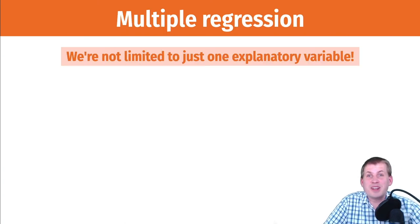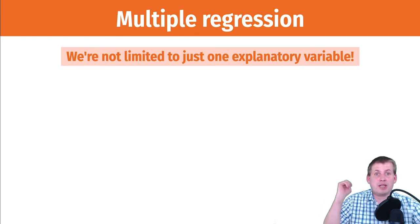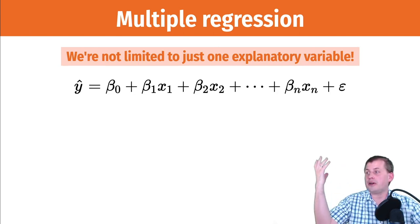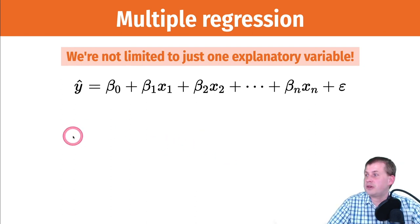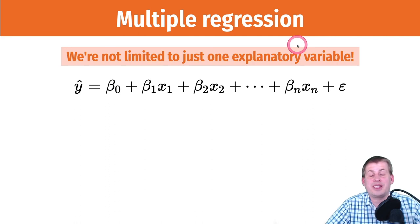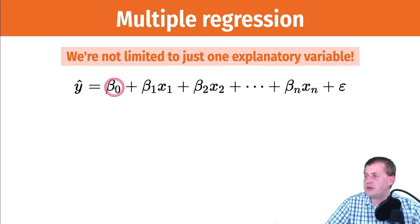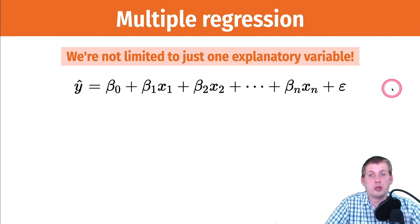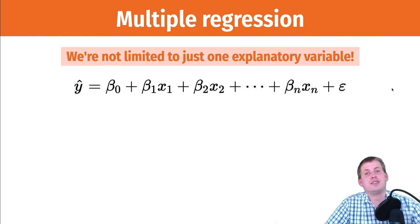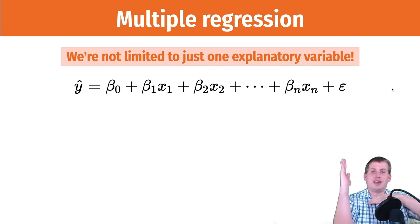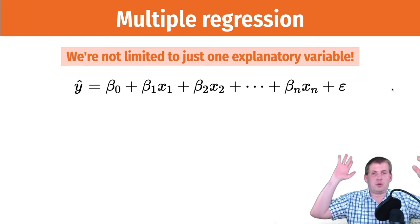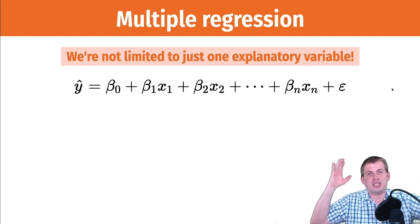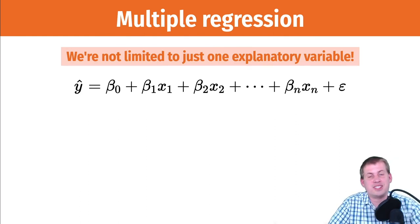You're not limited to just one variable — multiple regression lets you add many different variables. The formal equation has an intercept plus a slope for each x: beta-1 times x1, beta-2 times x2, beta-3 times x3, and so on. Each x gets its own slope, which makes it hard to visualize because you're no longer in a simple two-axis world — you're in a multi-dimensional space.